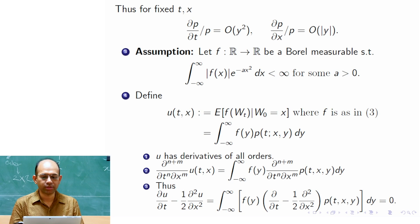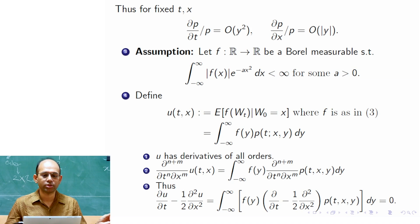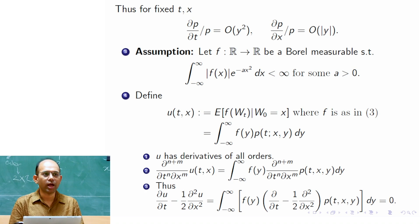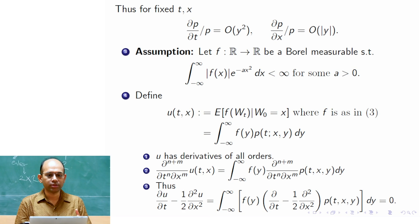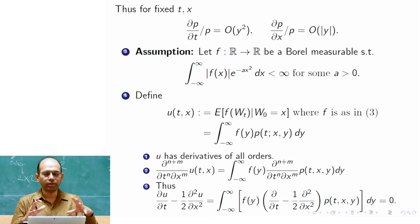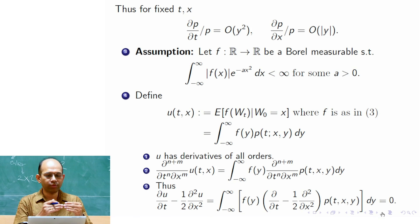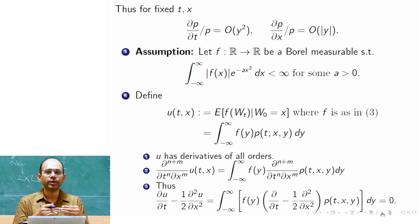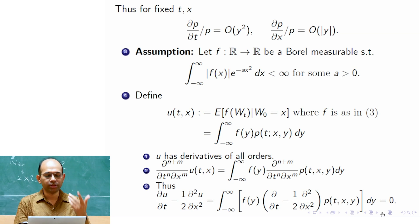This basically says that u, as a function on the upper half-plane — where the horizontal axis is the space variable x (the full real line) and the vertical axis is time — is a C-infinity function in the interior and satisfies the heat equation. On the boundary of this upper half-plane, at time t=0, u also satisfies the given initial condition f.